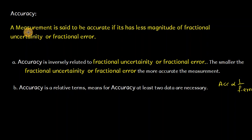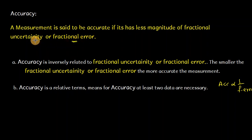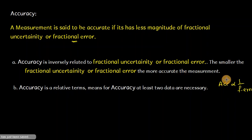A measurement is said to be accurate if it has a smaller magnitude of fractional uncertainty or fractional error. Accuracy is inversely related to fractional uncertainty or fractional error. The smaller the fractional uncertainty or fractional error, the more accurate the measurement.